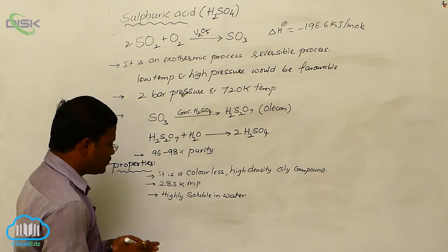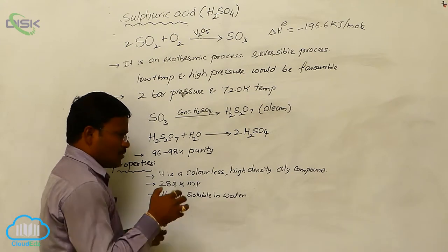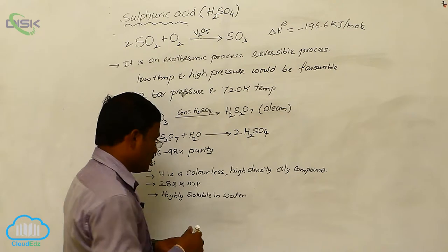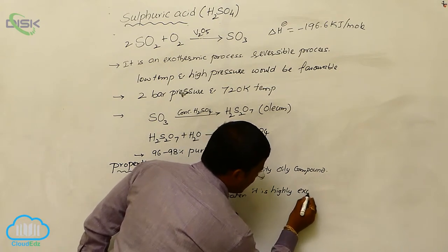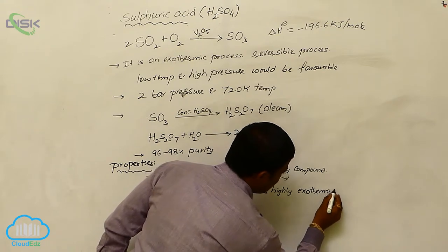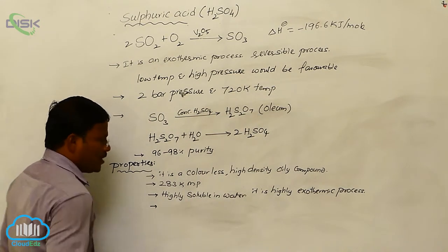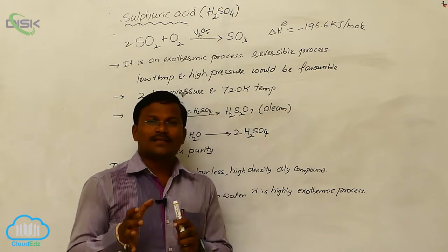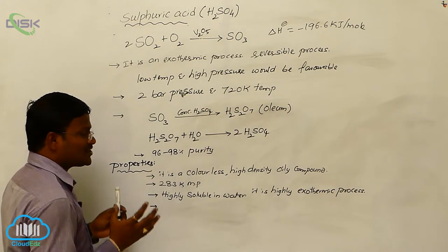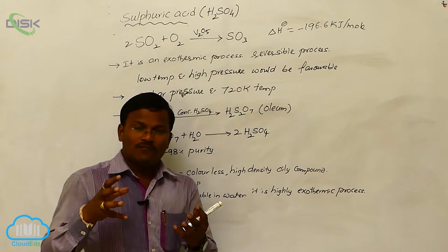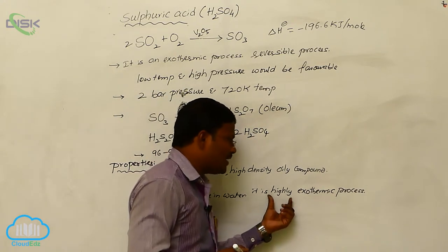An important point is that dissolving concentrated sulfuric acid in water is a highly exothermic process. While adding sulfuric acid to water, it produces a huge amount of energy, which is why it is called a highly exothermic process.